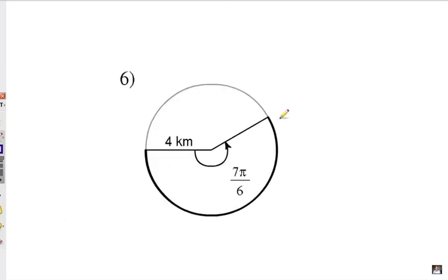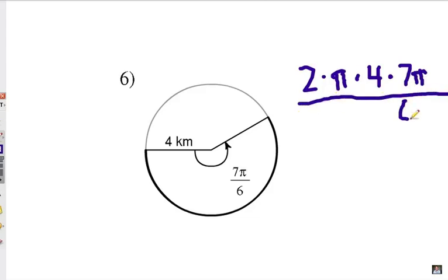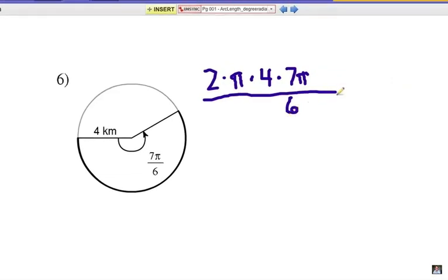Alright, number 6. Alright, the entire circumference is 2 times π, times the radius of 4 kilometers. Multiply by the central angle, 7π over 6. Now I'm going to go ahead and just move that 6 into the denominator. And then, of course, we divide by 2π, which means the 2π goes in the denominator.